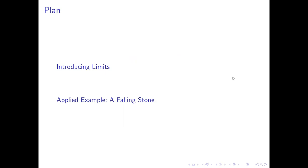So here's the plan. We'll begin by introducing limits, what they are, how they work, and then we'll look at an example in which we can see what limits are able to do for us and how they extend our understanding of functions. This will be an example from physics involving a falling stone. So let's begin by introducing the idea of a limit.